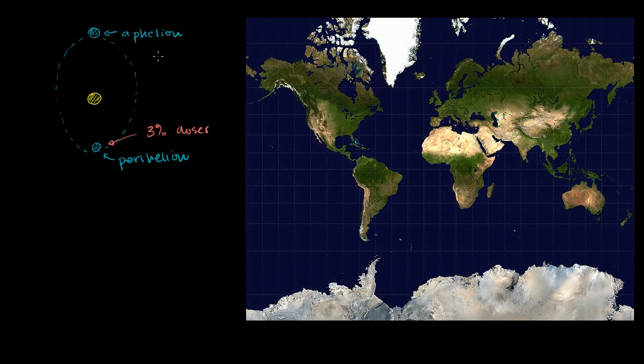And we point out in the first video when we discuss this that this is not the cause of the seasons. And in particular, perihelion, when we are closest to the sun, when we actually have the most radiation from the sun, that's actually when we have the northern hemisphere winter. This occurs in January. And aphelion occurs in July.